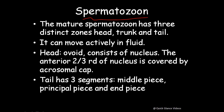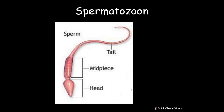The mature spermatozoon has three distinct zones: head, trunk, and tail. It can move in fluid using a flagellar infrastructure. The head consists of a nucleus, with two-thirds covered by an acrosomal cap. This acrosomal cap contains enzymes that dissolve the surface of the ovum during fertilization. The tail has three segments: middle piece, principal piece, and end piece.